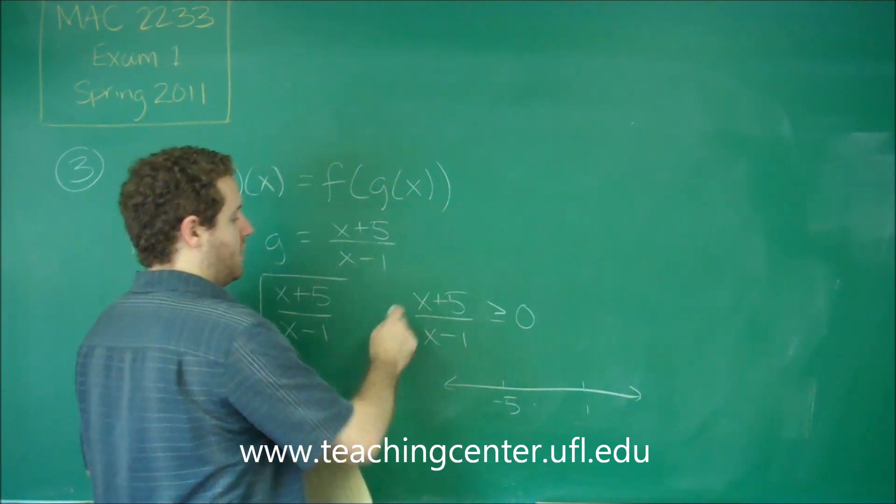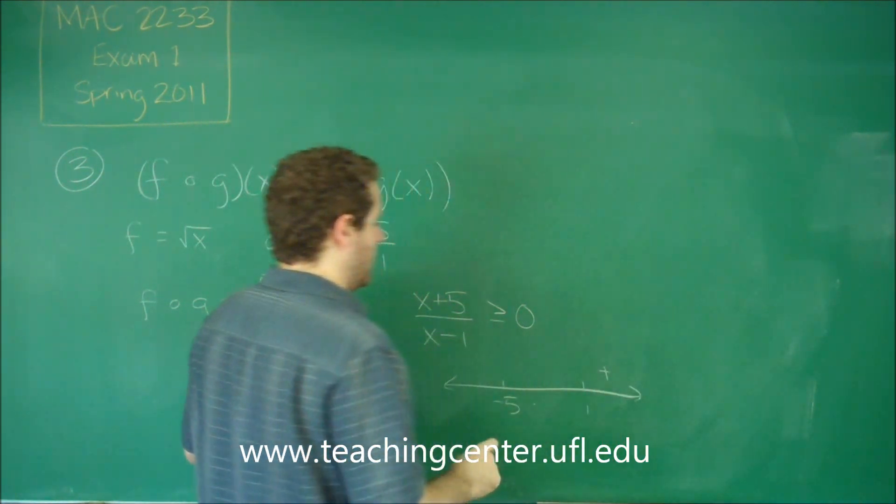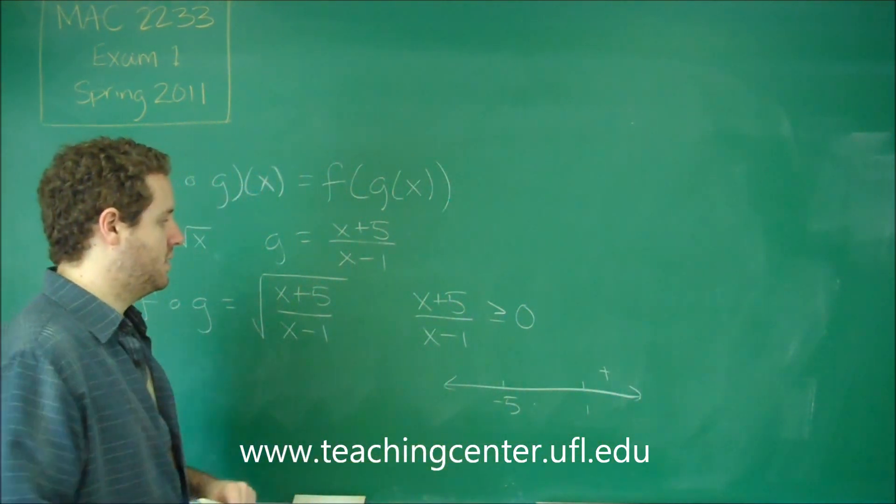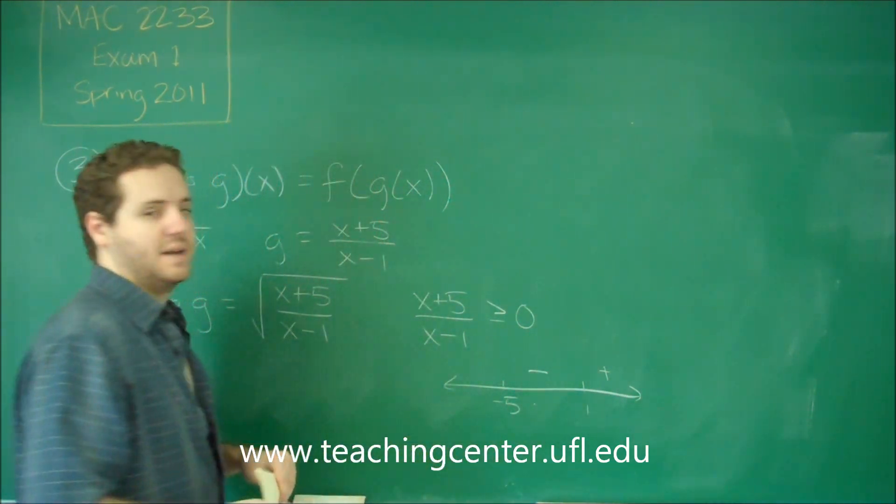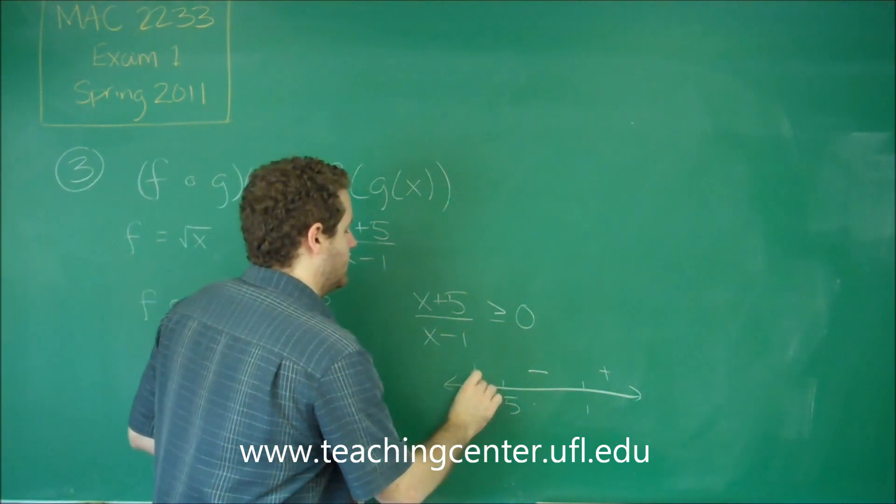Bigger than one, we get positive, positive. Somewhere in between negative five and one, like zero, we get positive, negative. And something smaller than negative five, we get negative, negative. So we get positive.